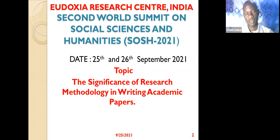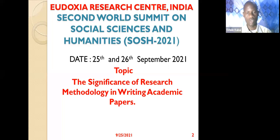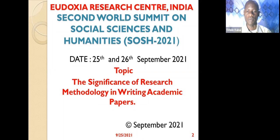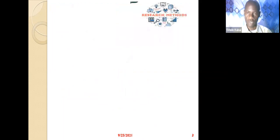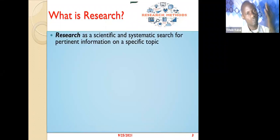In writing academic papers, research methodology forms part of Chapter Three, whether you're writing a proposal, a thesis, a project, or a dissertation. It plays a very significant role. As a researcher and academician, you need to be very conversant and knowledgeable about which kind of methodology you are going to use in terms of coming up with your paper.